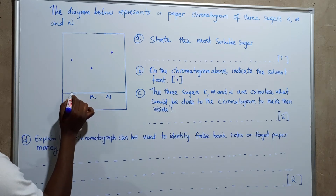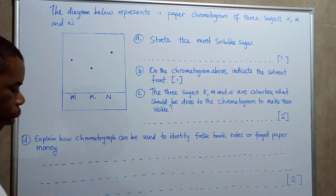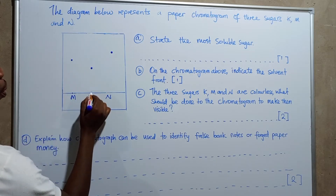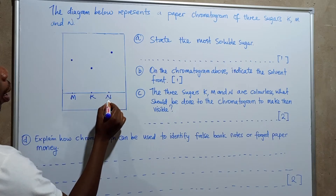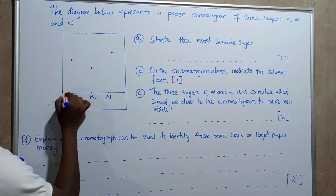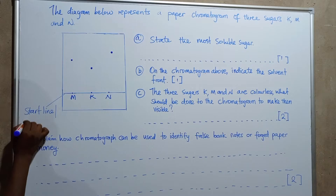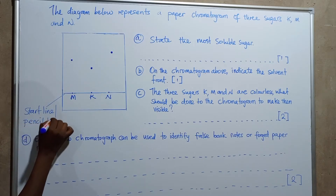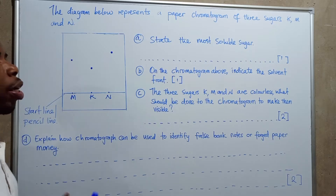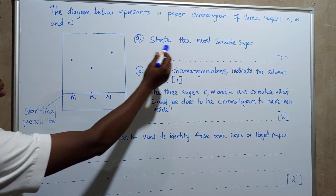We have sugars M, N, and K, which were placed on a line here — this is called the start line, also known as the pencil line, because we use a pencil to draw it. We use a pencil because it does not dissolve in the solvent and therefore does not contaminate the results.